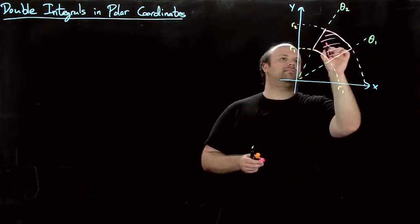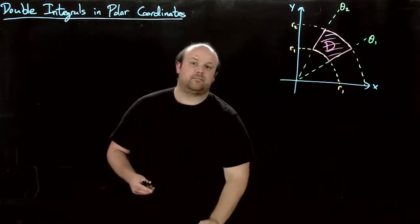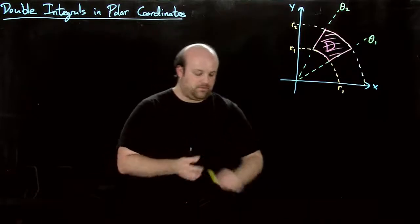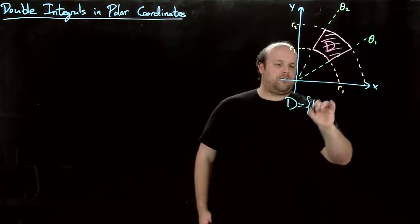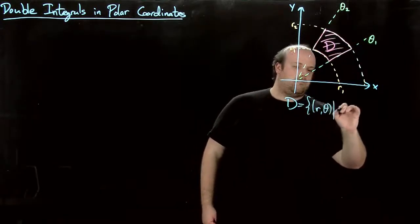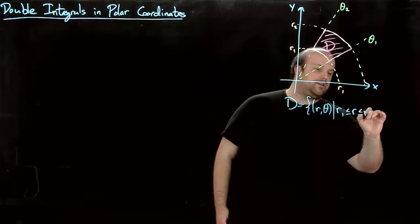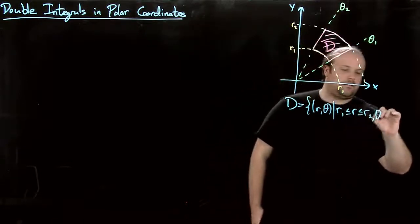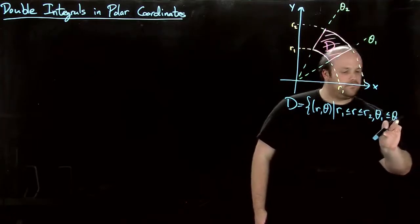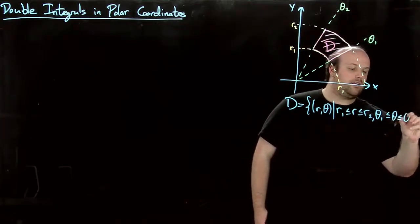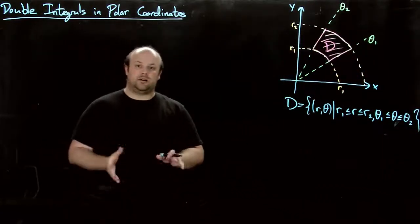All right, this is d. How do we describe d in polar coordinates? D is just the r thetas where r goes between r1 and r2 and theta goes between theta 1 and theta 2.